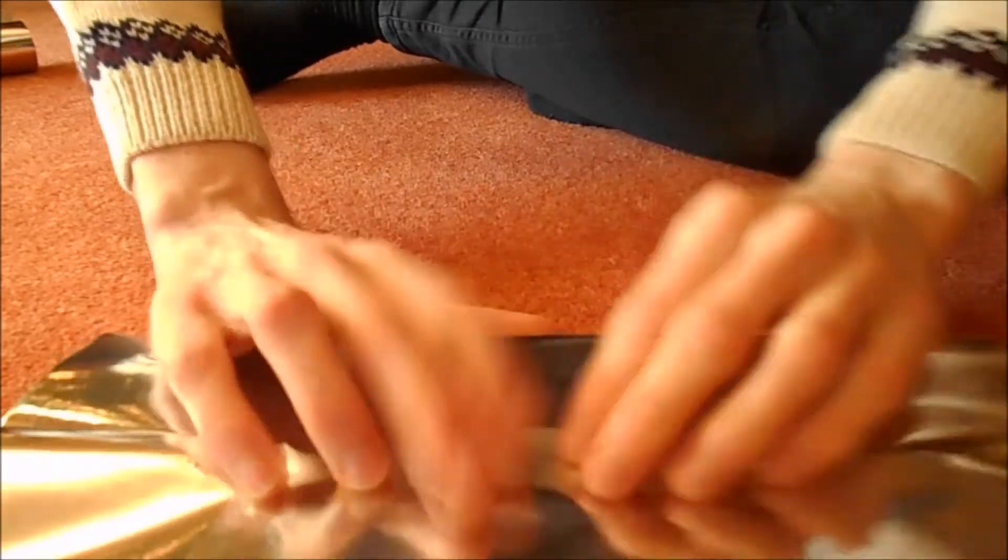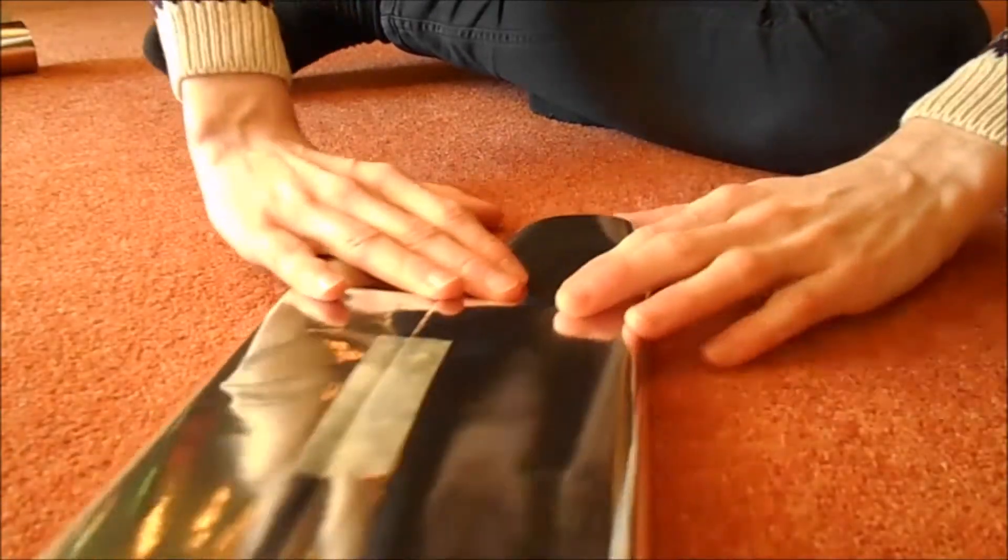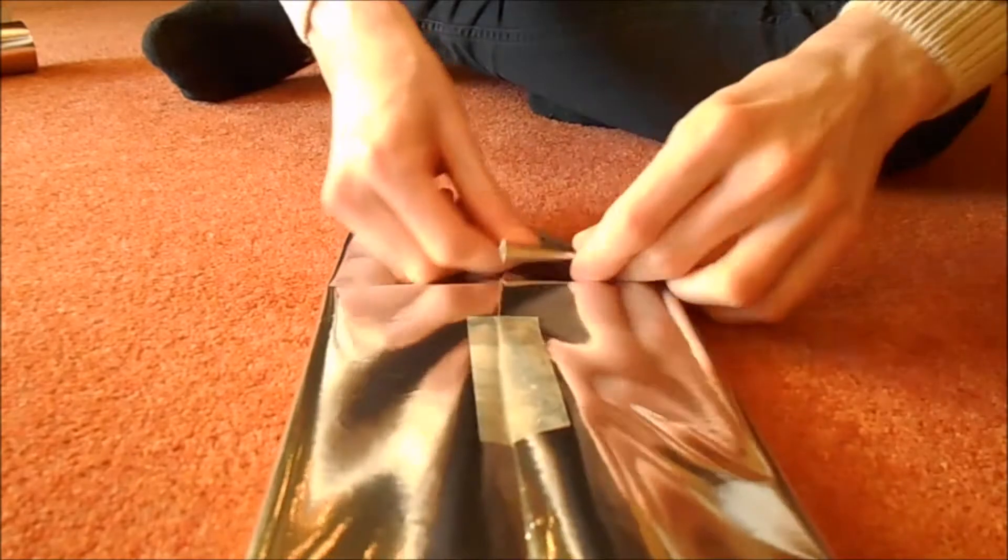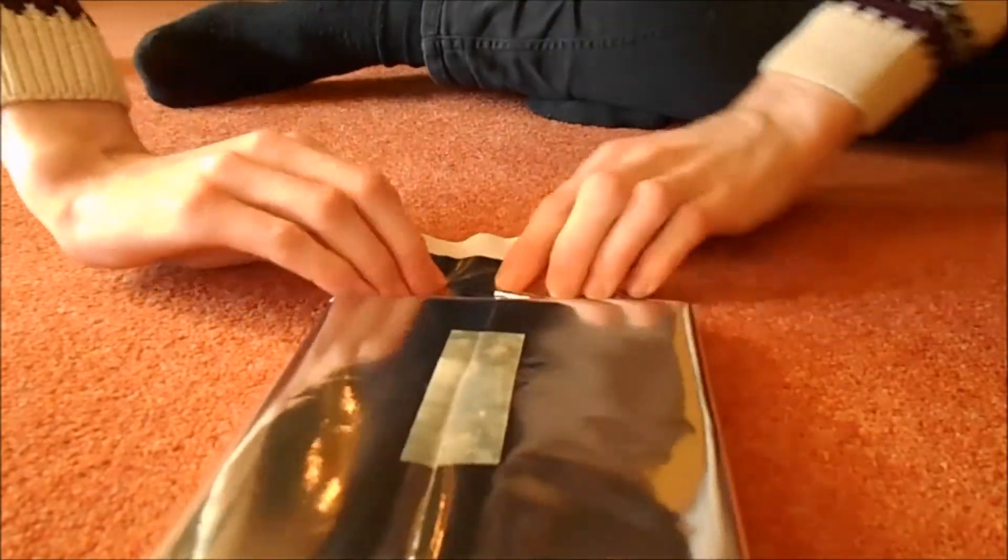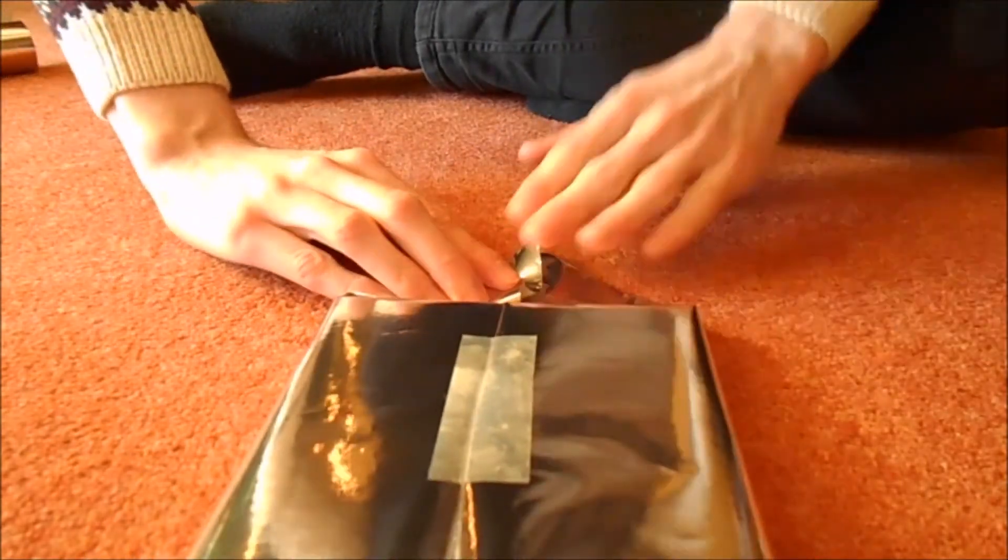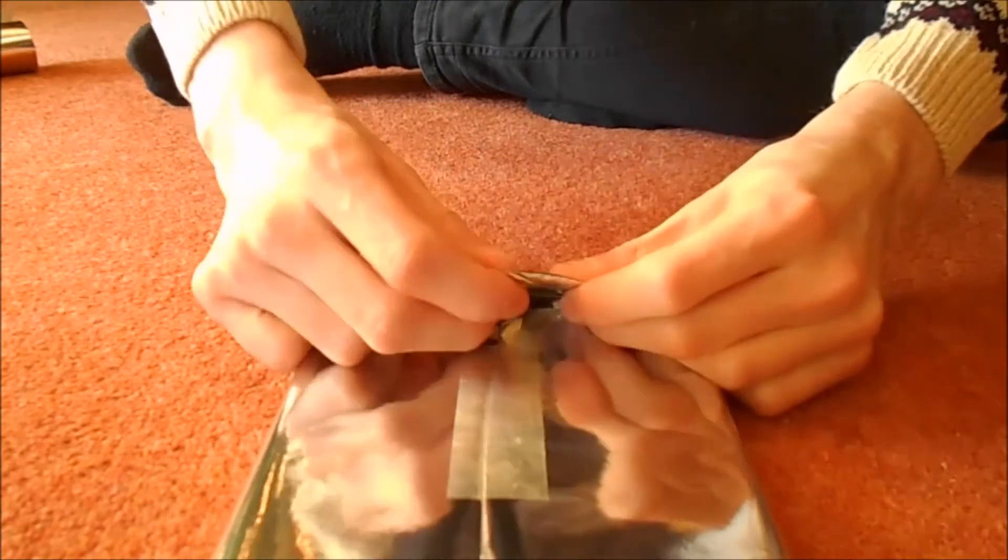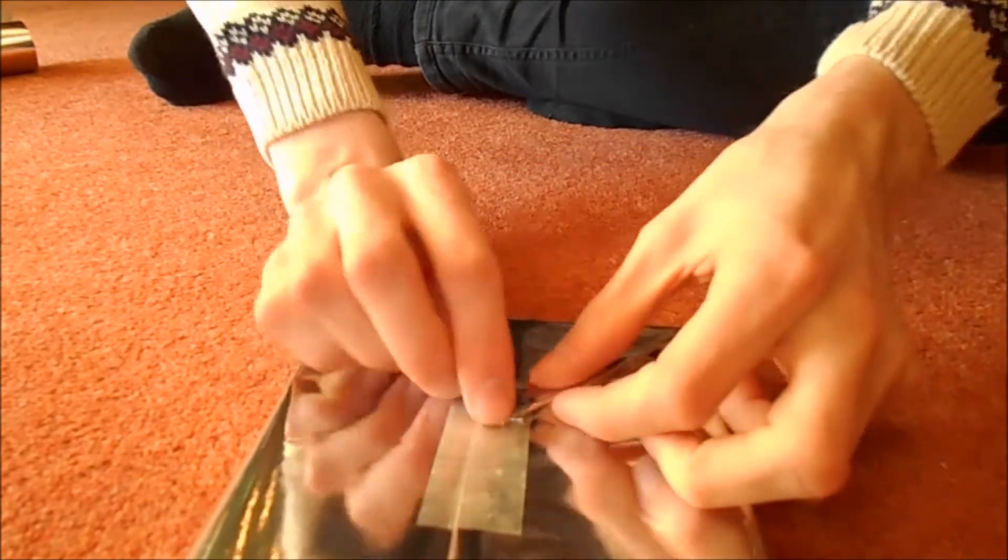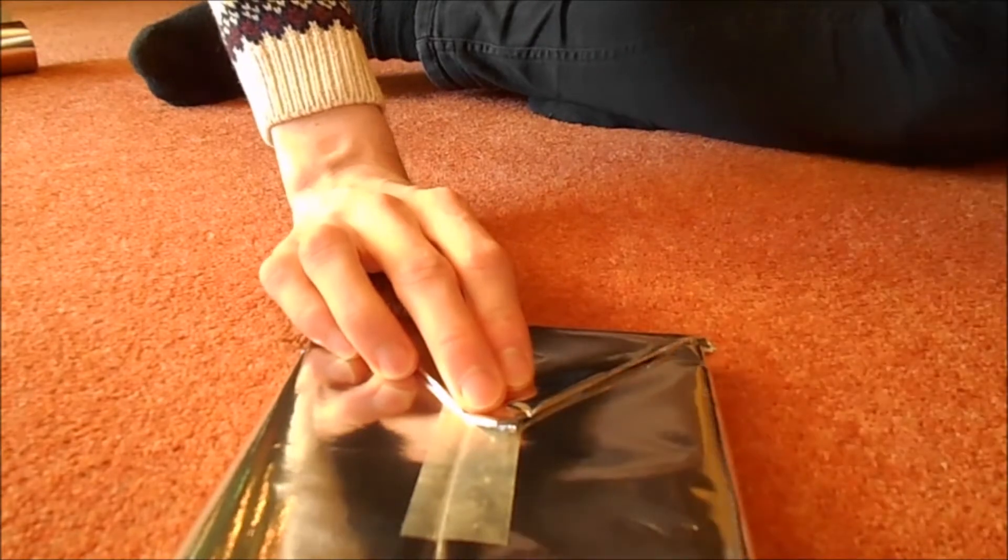Then you grab the corners like this, take it into like a little triangle. Do the same at this side and hopefully it will overlap and make this little triangle at the front. Then you just do that and then get some more tape.